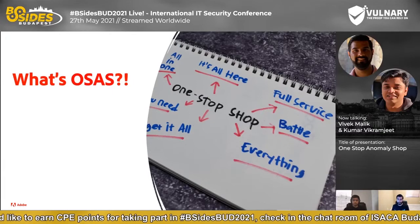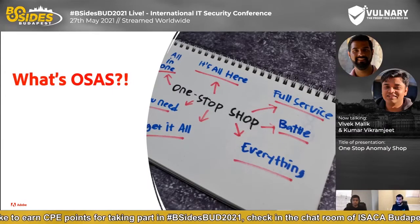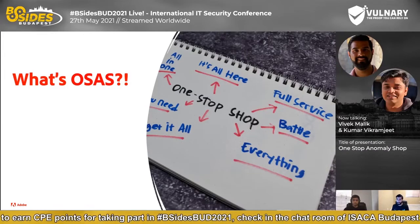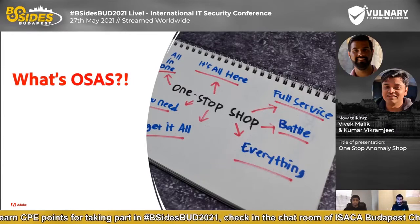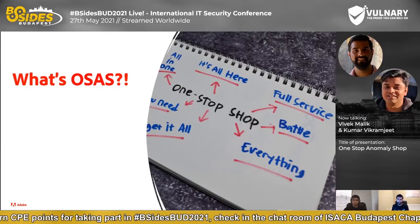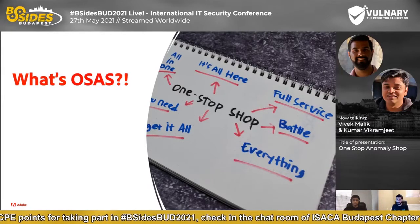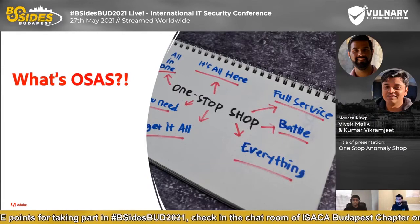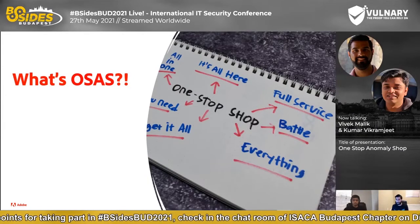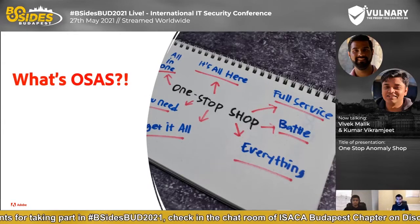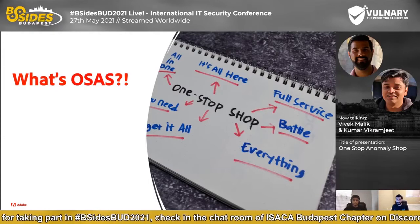OSAS, or One-Stop Anomaly Shop, is a machine learning framework aimed to discover anomalies in a given dataset. The open source project represents an implementation of several Adobe Security Intelligence Team's patterns, white papers, and other projects. The goal of OSAS is to make it as easy as possible to experiment with different datasets, algorithms, and feature combinations, and find the most balanced combination for your own use case and data. But most importantly, OSAS will try to answer why an anomaly is considered actually an anomaly.